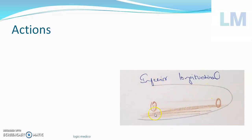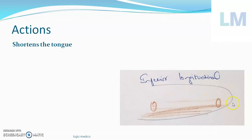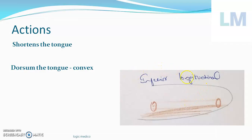What happens when this longitudinal muscle contracts? Can it flatten the tongue? Will it become convex? Will it shorten the tongue or will it lengthen the tongue? If you answered shortens the tongue, that is correct. So this inferior longitudinal muscle upon contraction will shorten the tongue. When it shortens the tongue, food — or whatever ice cream or any stuff or water you are eating — will enter your oral cavity. In addition to that, the dorsum of the tongue, the upper surface, will become convex — it will go and touch the palate like a wave in the ocean.